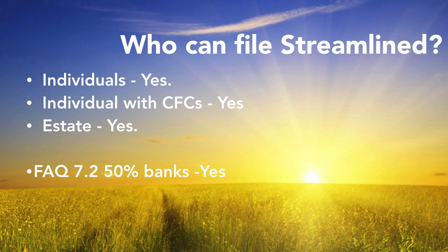Let's talk about who can file a streamline — assuming non-willfulness. Individuals can file. Individuals with controlled foreign corporations, yes. Estates — the administrator of the estate can file for someone who is deceased. And under FAQ 7.2, those 50% banks — one recent one being Sovereign in Panama — if you are on that list, you can file a streamline, as long as you were non-willful. It's not about what the bank was up to, but what you were up to.